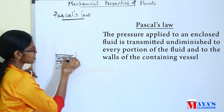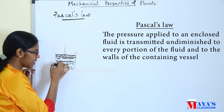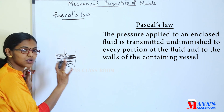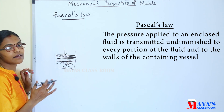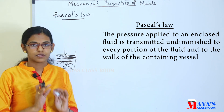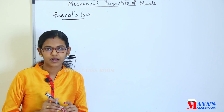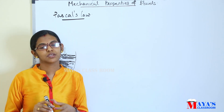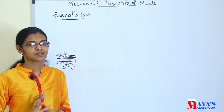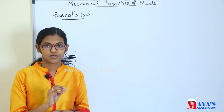We have a piston to apply force or pressure. The pressure is transmitted equally. This pressure is applied in hydraulic machines. That is why we use hydraulic machines — hydraulic lift and hydraulic brake.